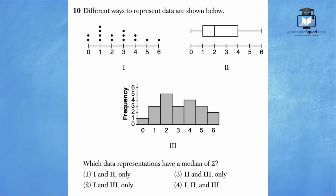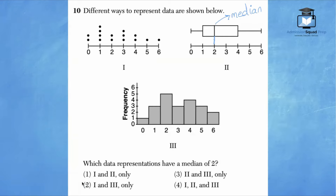Number 10: which data representations have a median of 2? The easiest representation to find the median is the box and whisker plot — the middle value is clearly 2, so the correct answer must include choice 2. We can eliminate answer choice 2 from contention since it omits the box plot. Now let's check the dot plot.